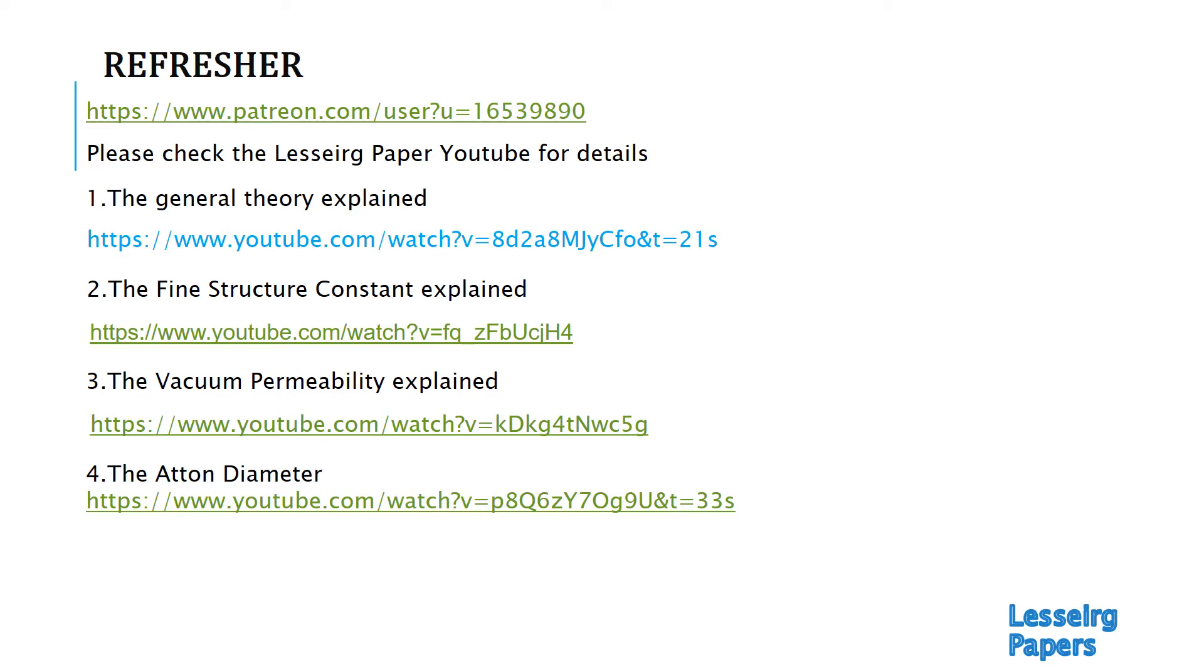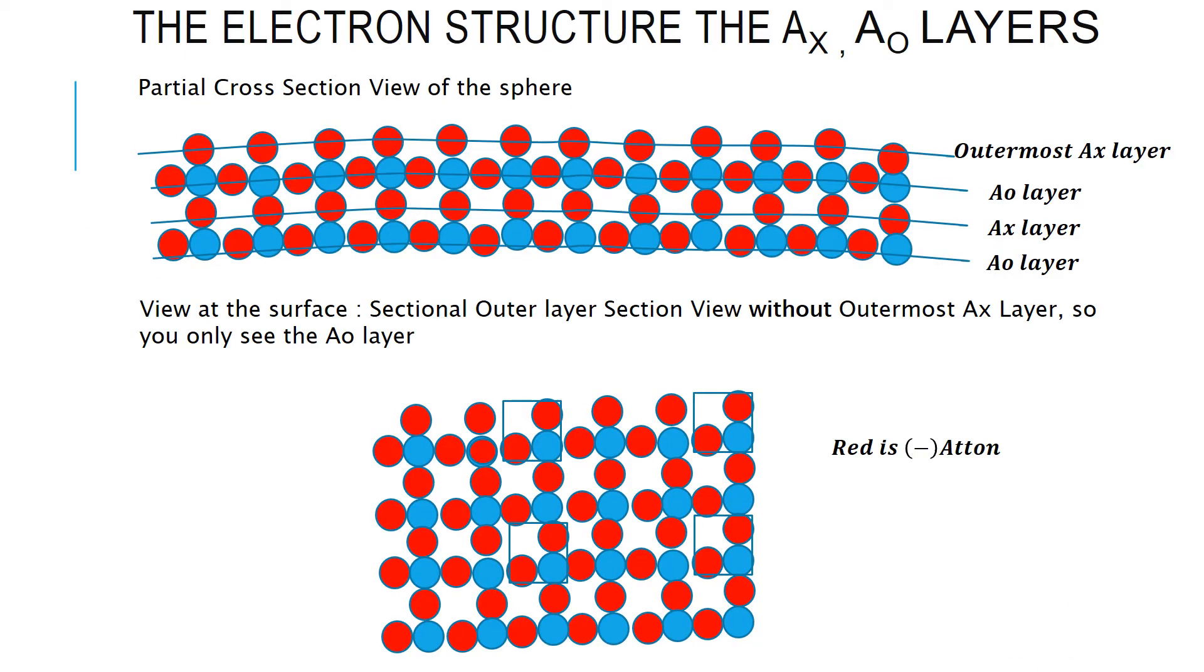So, let's go now to the electron structure and look at the first picture here, which is a cross-section of the most outer layer of the electron. You can see here, I have basically pictured four layers. I could have pictured six layers or eight layers or 12 or any number. So, the first layer is the AX layer. The second layer with the negative, with the positive add-ons, in this case of the electron, is the A0 layer.